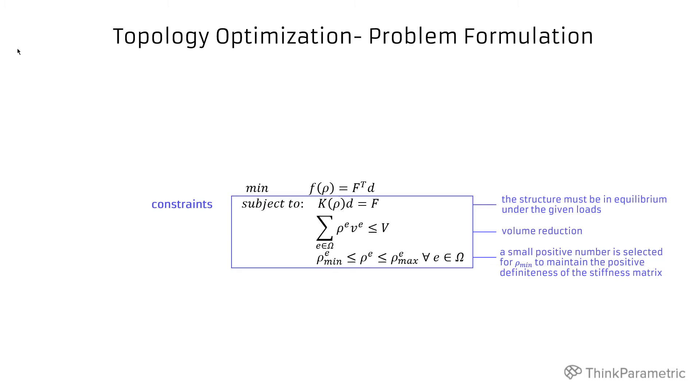And then we have a set of constraints. The first constraint stands for the structural equilibrium. So basically our structure at each iteration cannot collapse and definitely the final design shouldn't collapse. The second constraint is a volume reduction. So the volume you want to achieve from the initial domain, how much we would like to reduce this initial volume.